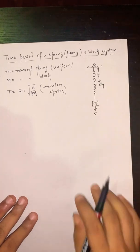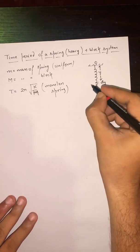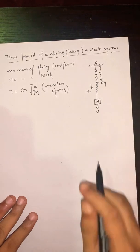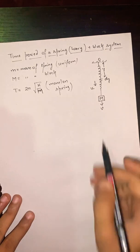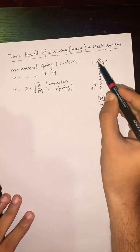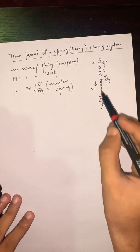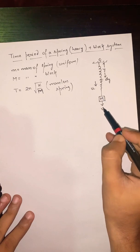As we know, the speed will increase linearly from here to here. Speed at this point is zero and speed of the block is V.